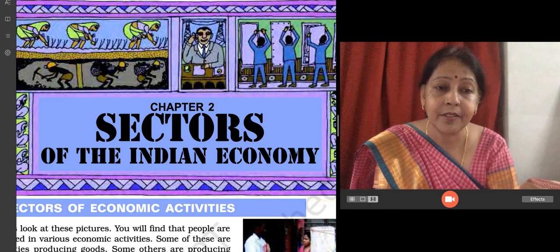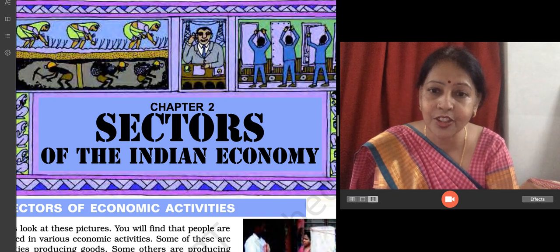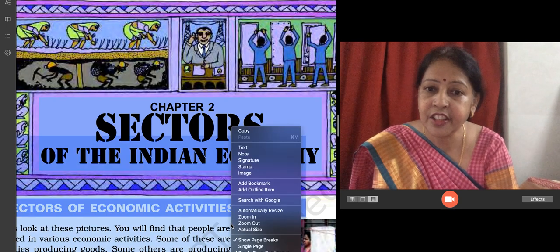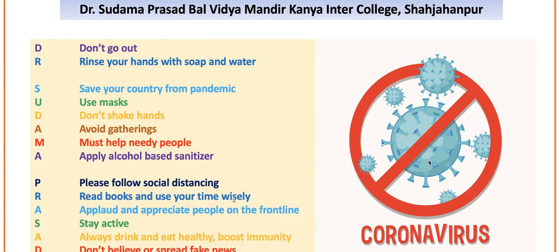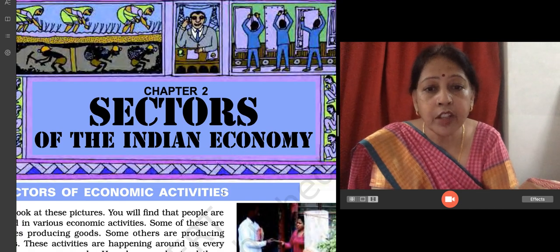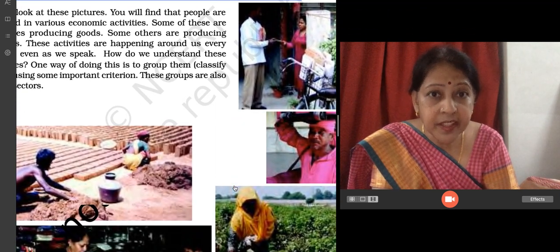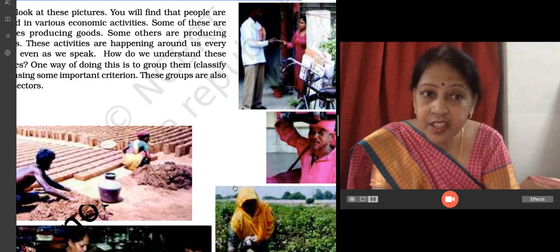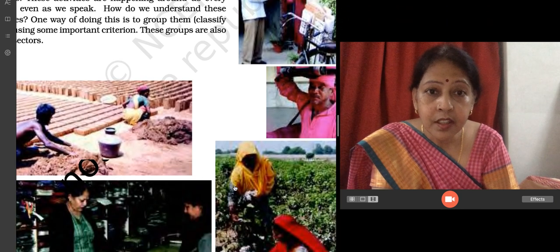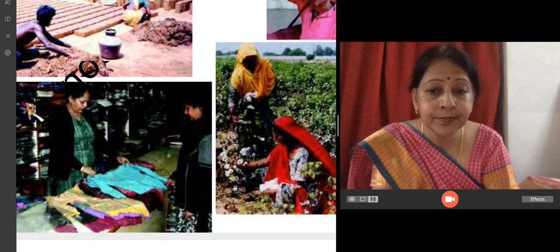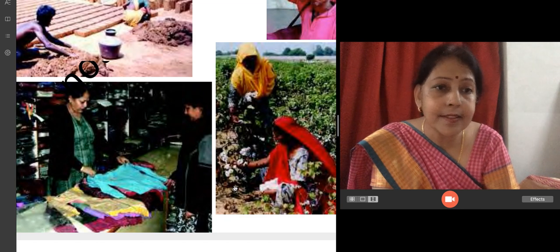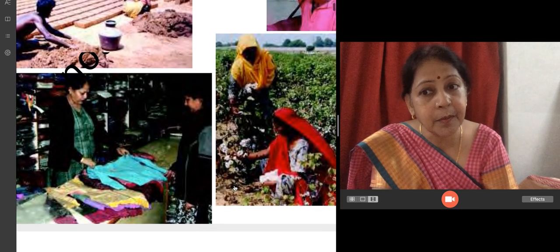We classify, in this lesson, you can see different economic activities like brick making, a courier service, a man who has brought a courier, a coolie, and farming. These are all economic activities. Some come in the primary sector, some in the secondary sector, and some in the tertiary sector.